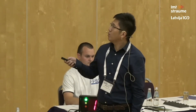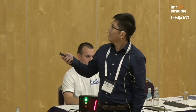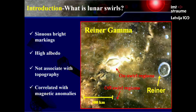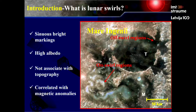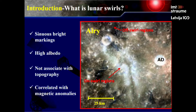Lunar swirls are bright sinuous markings observed on the lunar surface. They have a higher albedo than their surrounding areas. This bright region we call it on-swirl regions and this dark region we call it off-swirl regions. Lunar swirls are not associated with any topography, and all of the swirls are correlated with magnetic anomalies.